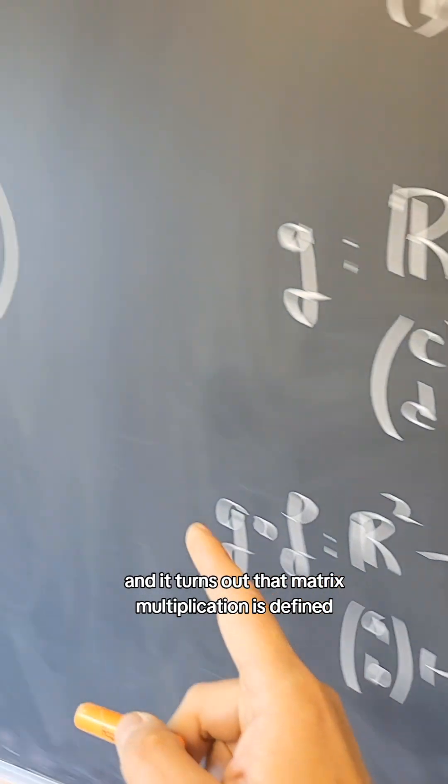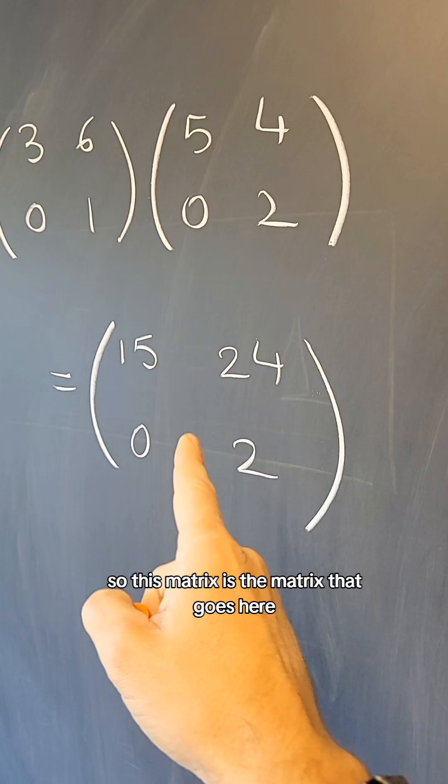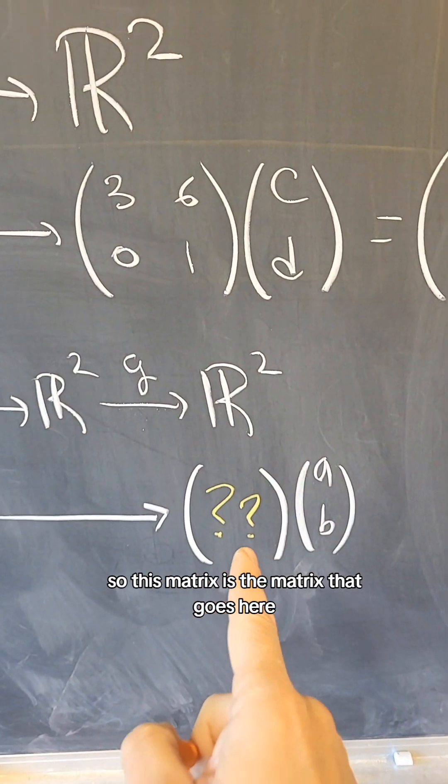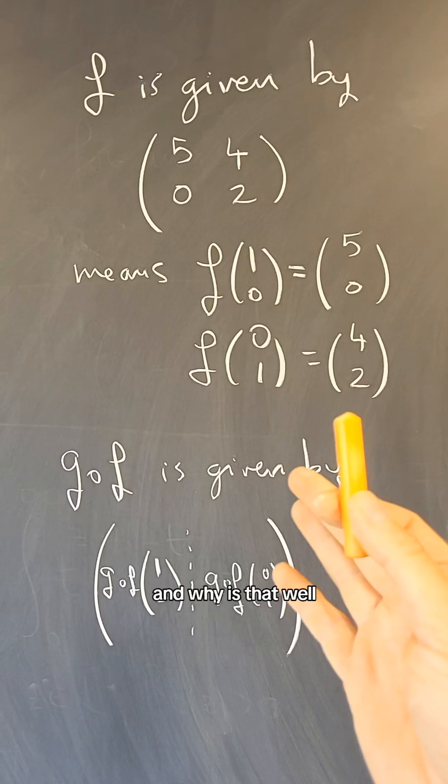And it turns out that matrix multiplication is defined so this matrix is the matrix that goes here. And why is that?